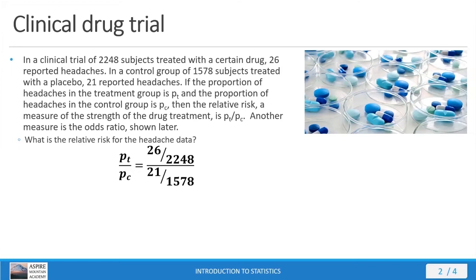The proportion is calculated the same as a probability — we're looking at the part over the whole. Once we get to this point, all we have to do is the math. Fractions within our fraction mean you take the fraction on top and multiply it by the reciprocal of the fraction below. So I take the fraction below, turn it upside down to get the reciprocal, then multiply straight through: 26 times 1578, divided by 2248 times 21. That gives us 0.869 — there's your relative risk for the headache data.